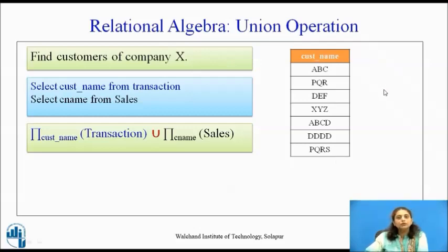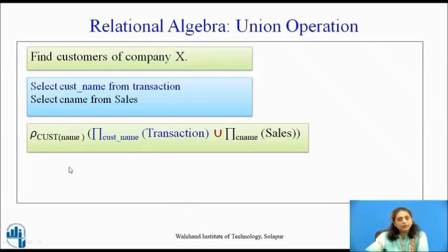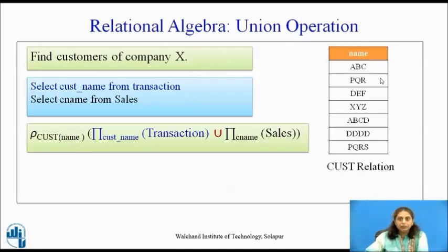Now suppose we want to send greeting cards to all customers and use this result further. We can apply a rename operation — naming the relation 'cust' and the attribute 'name'. The result is the same but the attribute name becomes 'name' and the relation name becomes 'cust'.